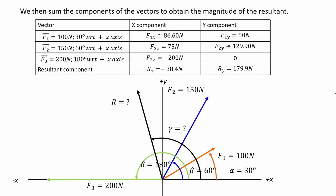We then sum the components of each vector. The component along x for the resultant is negative 38.4 newtons, and the component along the y axis is 179.9 newtons. Drawing the components, we see that the resultant would be in the second quadrant, which is due to the fact that its x component is a negative value.